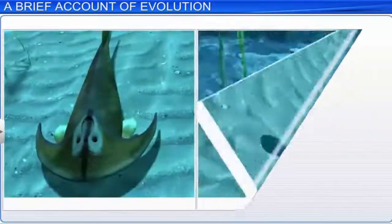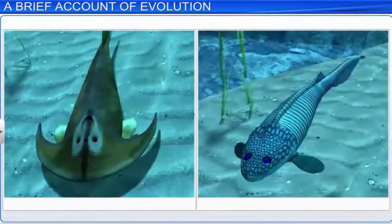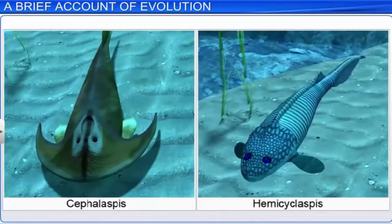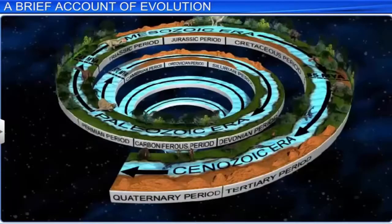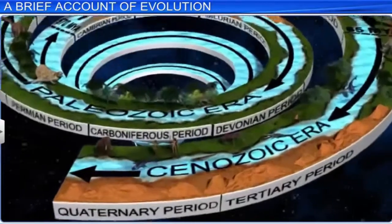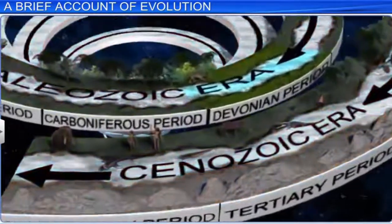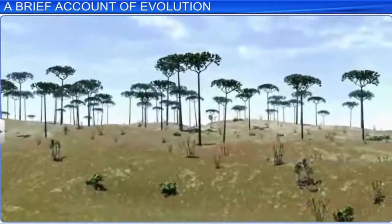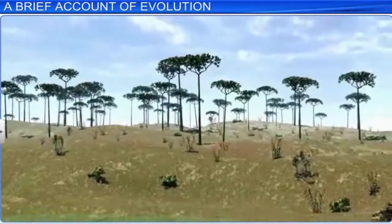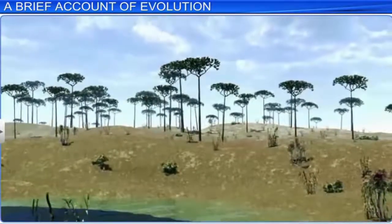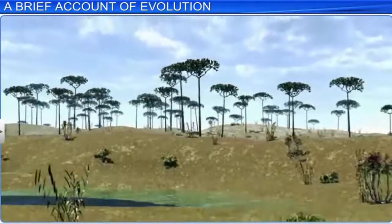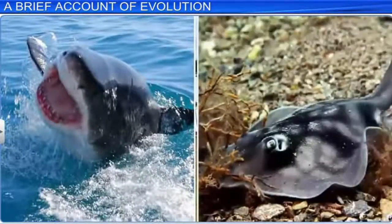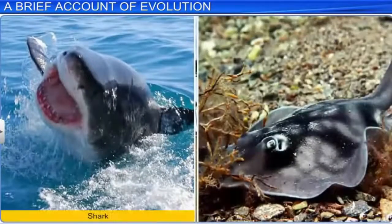For example, Cephalaspis and Hemicyclaspis. Next came the Devonian period, in which plants grew in profusion and covered a large part of the Earth. This period also witnessed a rapid evolution of fish such as sharks and rays.